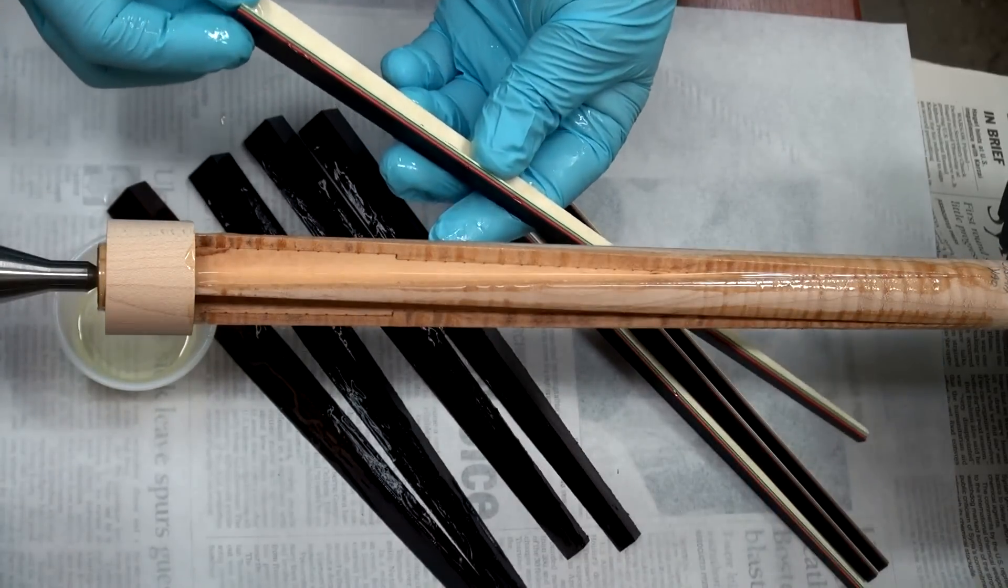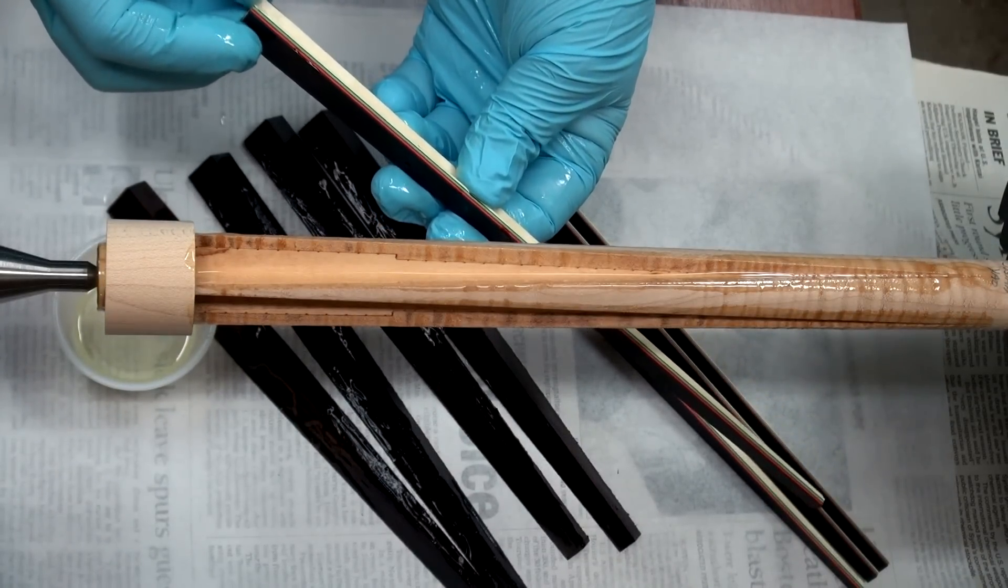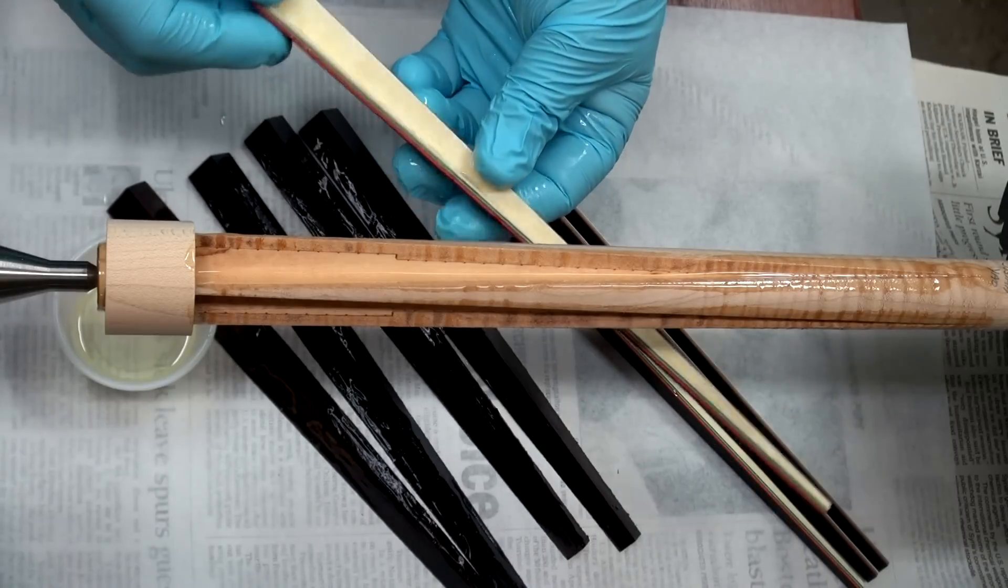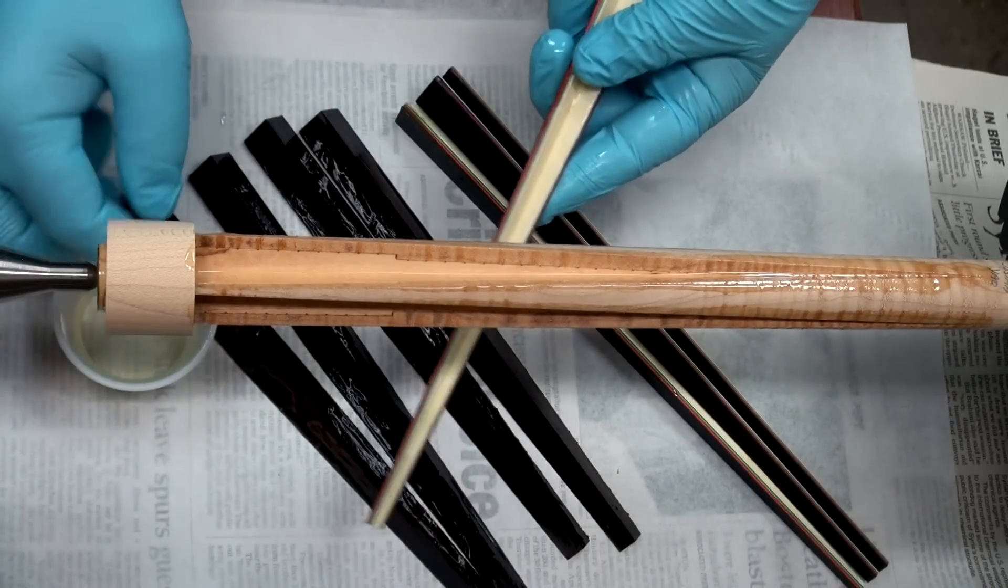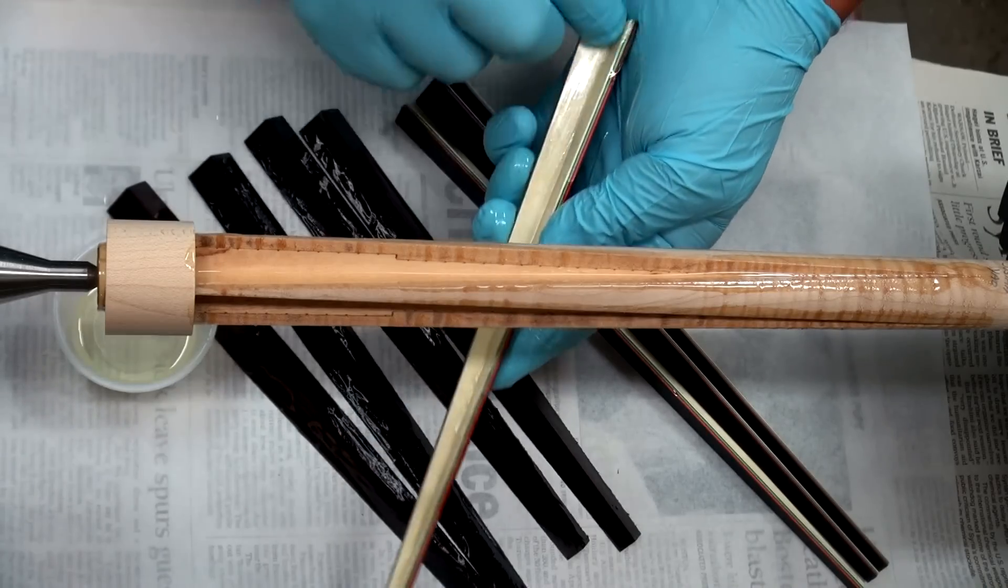And now the veneers. These are black, red, green, and white with black paper in between. Put some epoxy on each side.